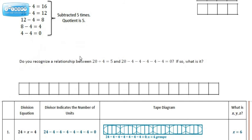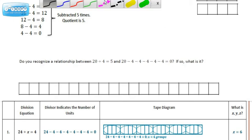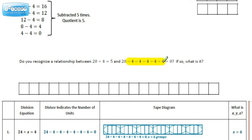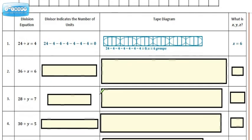Do you recognize the relationship between 20 divided by 4 equaling 5, and 20 minus 4, minus 4, minus 4, minus 4, minus 4 equaling 0? What's the relationship? Here's what I want you to pay attention to: how many times do you see this? If we count 1, 2, 3, 4, 5 times — isn't that what we have for a quotient here? Let's take a look at these examples.